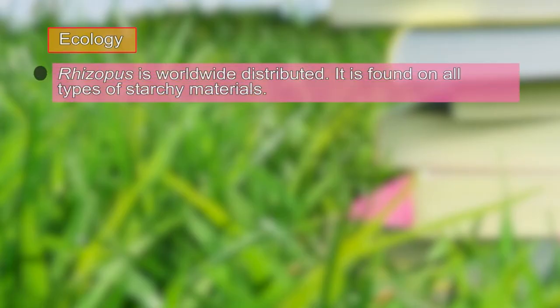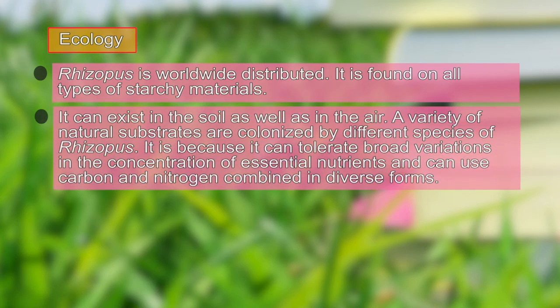Moving on to the ecology of Rhizopus, we find that it is a worldwide distributed species. It is found on all types of starchy materials, and can exist in soil and air. A wide variety of natural substrates are colonized by different species of Rhizopus, showing that it has a tolerance for a variety of carbon and nitrogen sources.